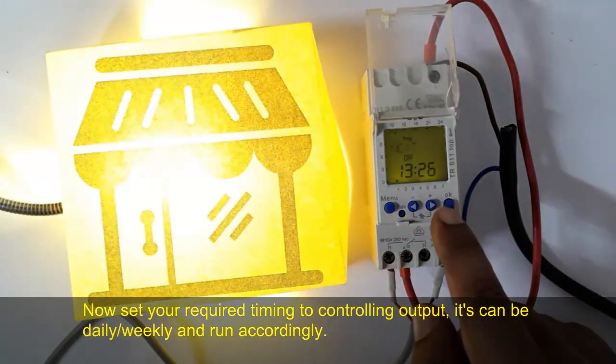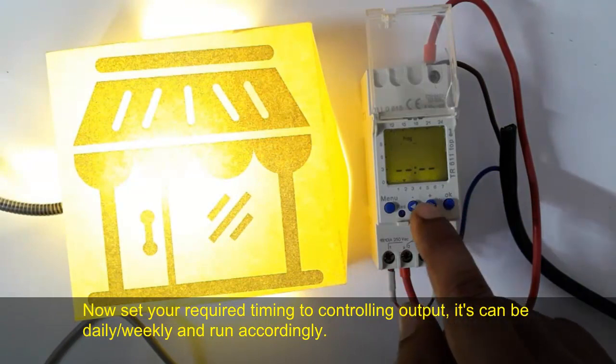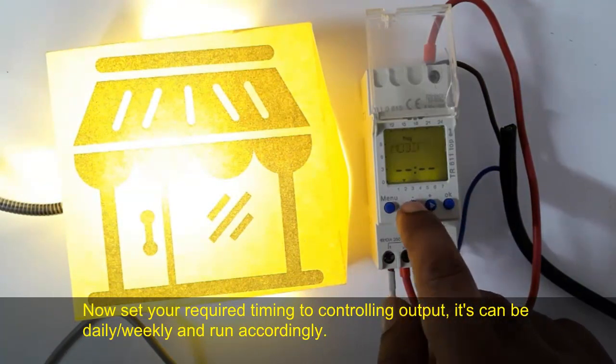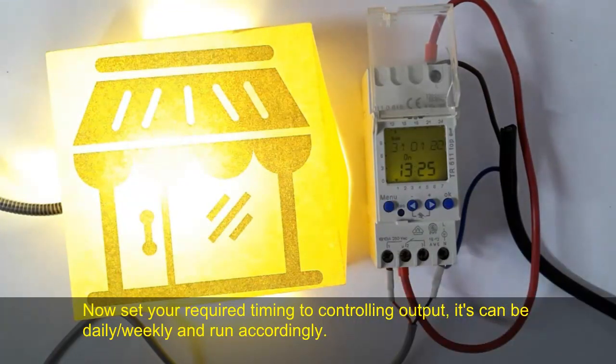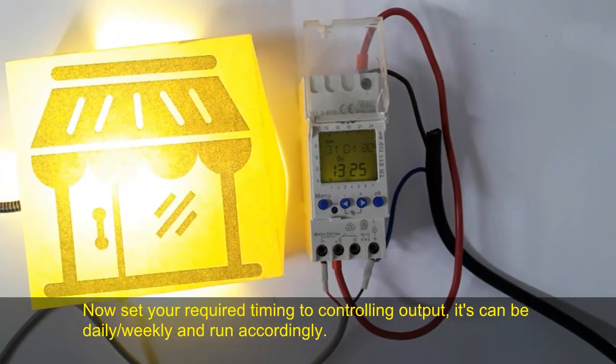We are starting the program from 13:25. Now it's 13:25 and the output is on. The output is working as per the set program which we programmed in the timer. This timer will work as per the set program.